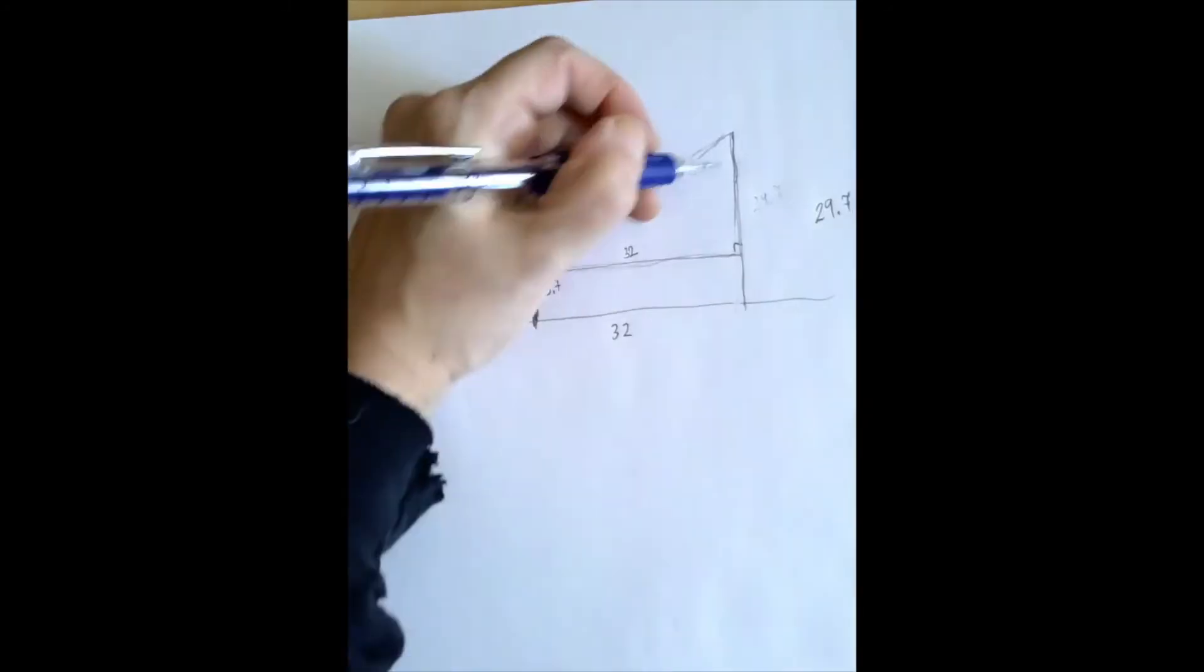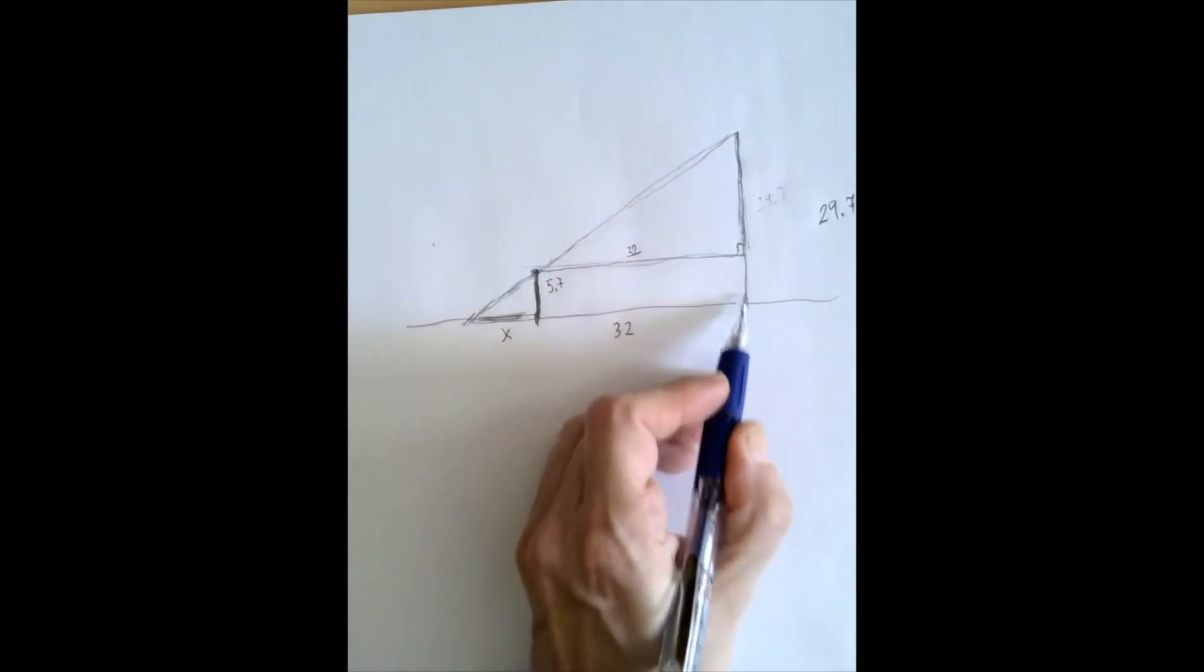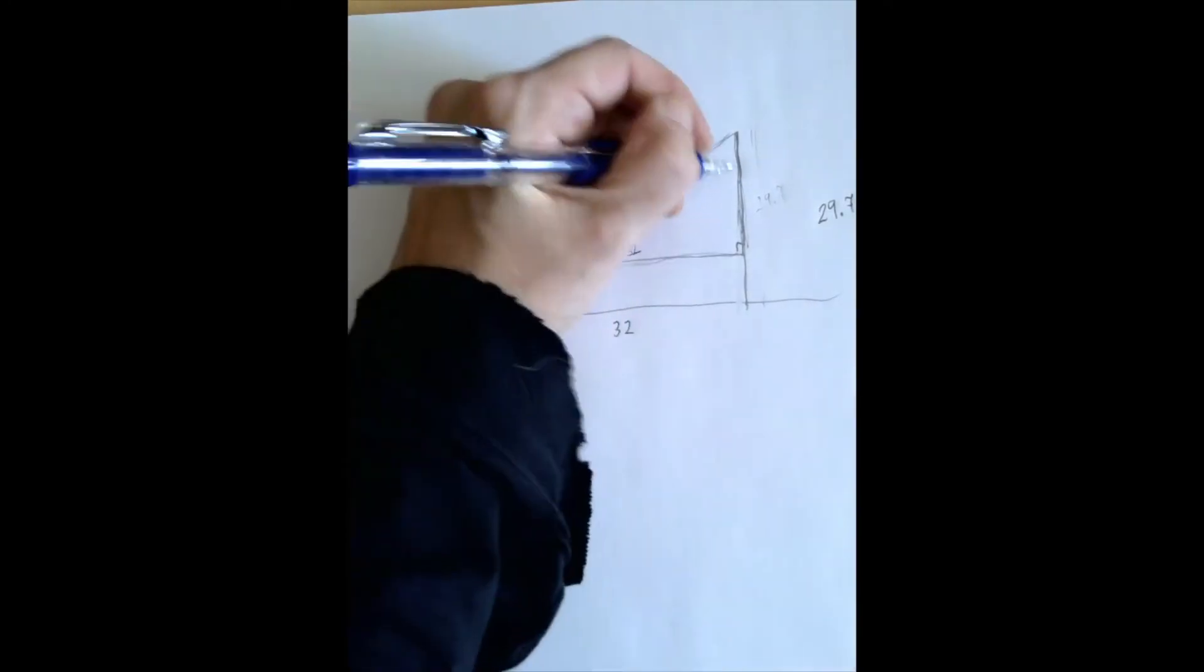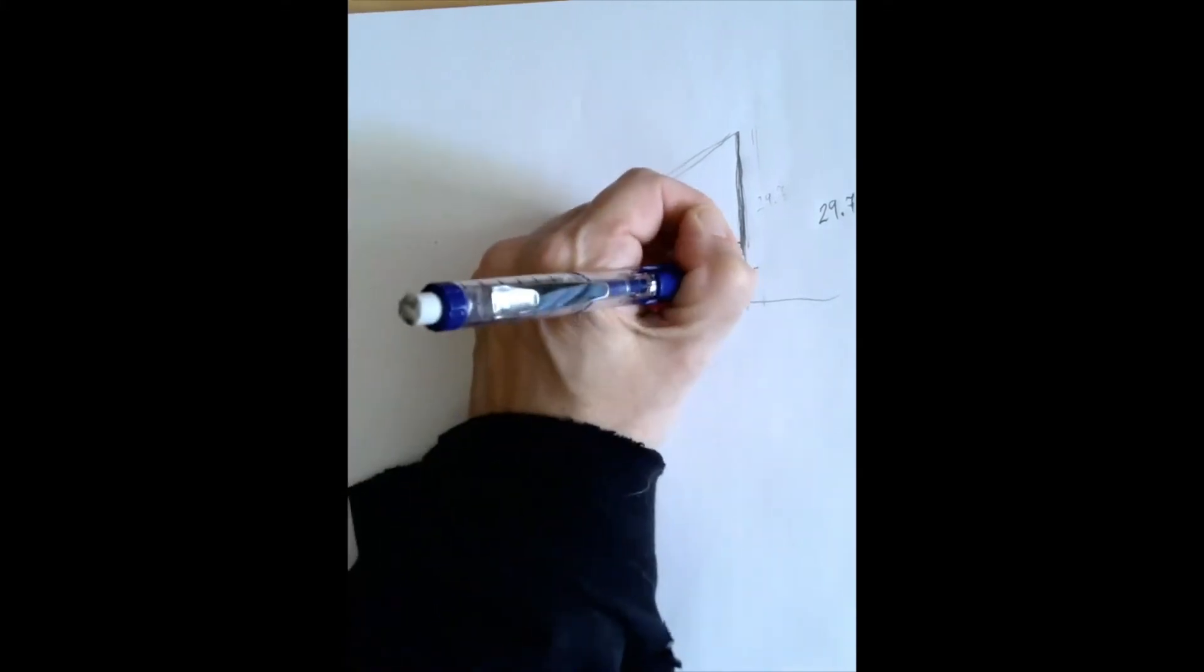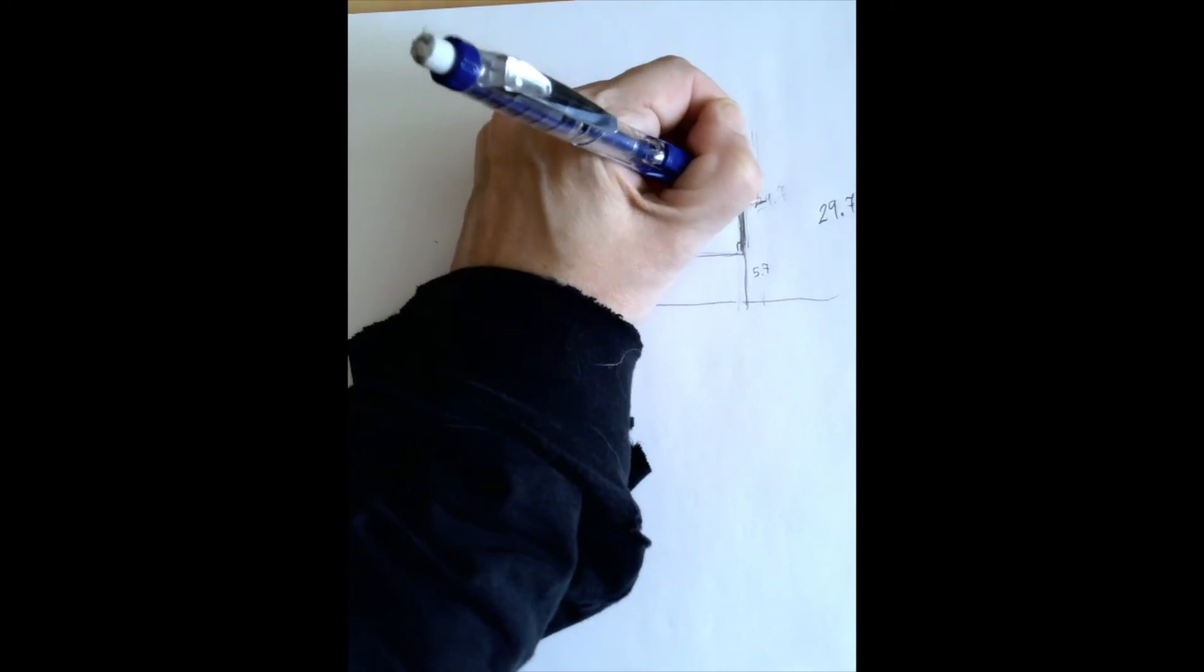And now the question is, okay, what about this side here? This side is not 29.7 because this whole thing was 29.7. This here is 5.7 less. This is 5.7. So if we subtract it from 29.7, we get 24.